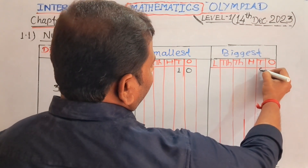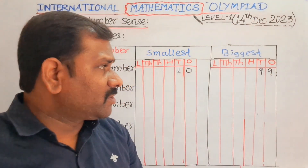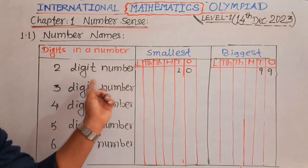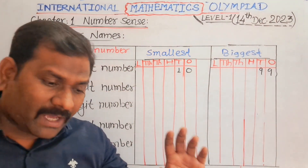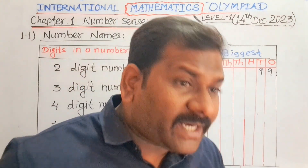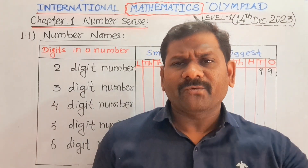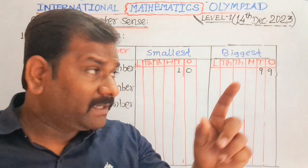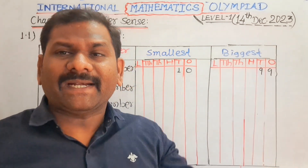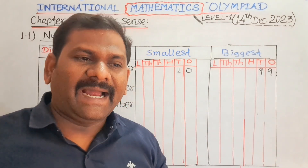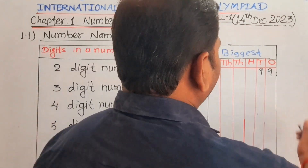99 is the biggest two-digit number. Now what is a three-digit number? When we add one to 99, you will get an answer, and that answer is a three-digit number.